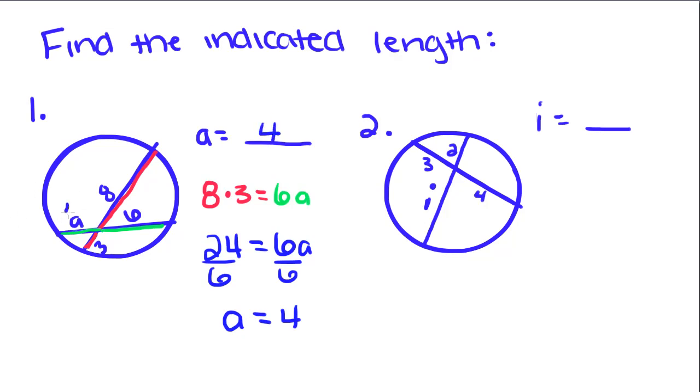We can check that by doing 8 times 4 equals 6—oh, I made a mistake. It should be 8 times 3 is equal to 6 times 4. 8 times 3 is 24, and 6 times 4 is 24. That's a good way to check your answer.